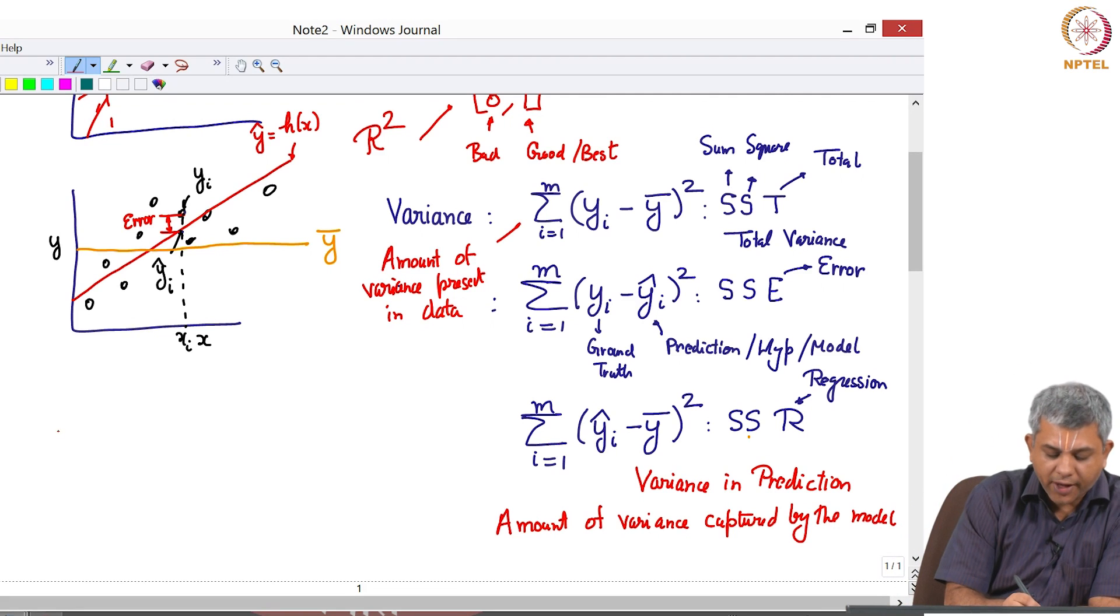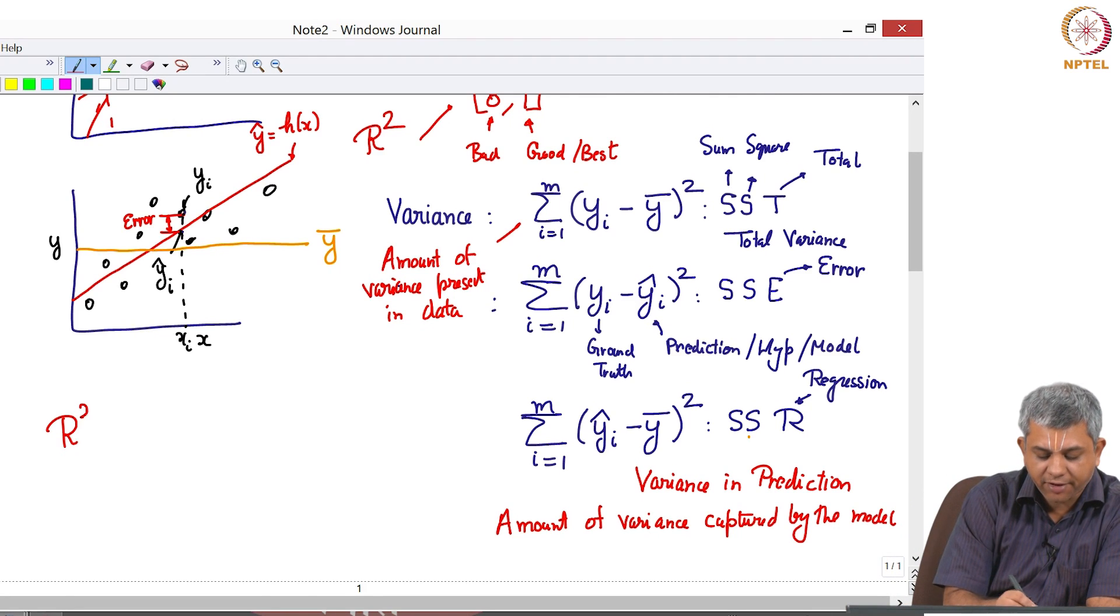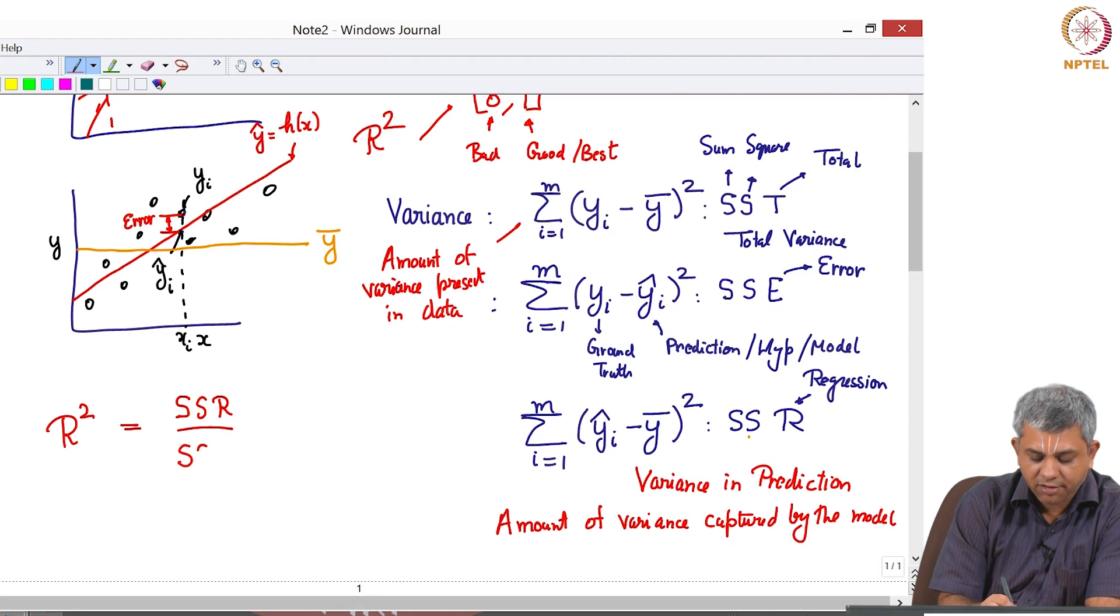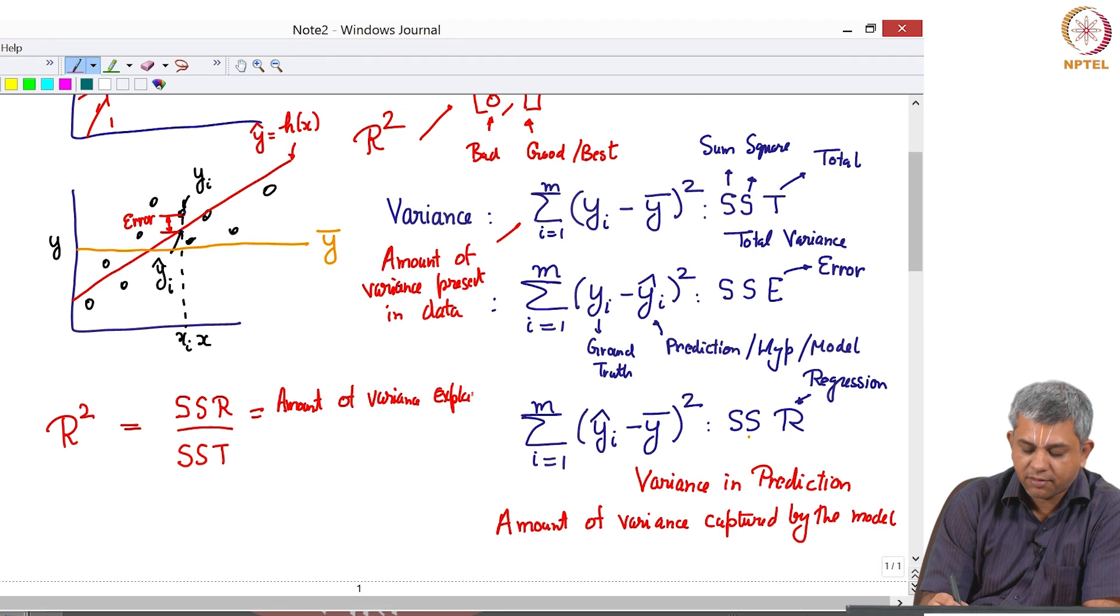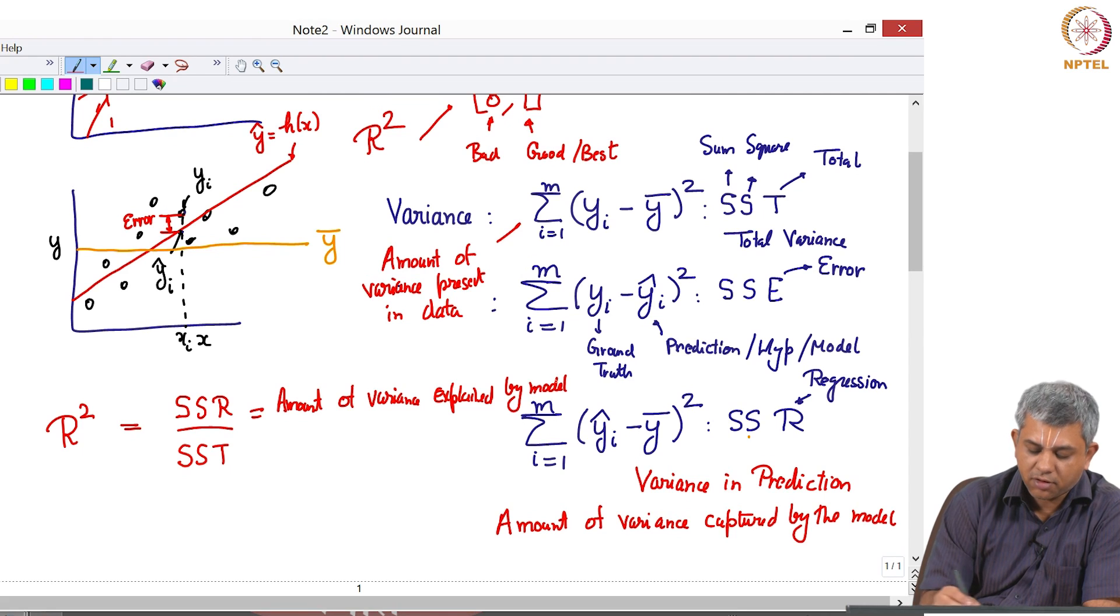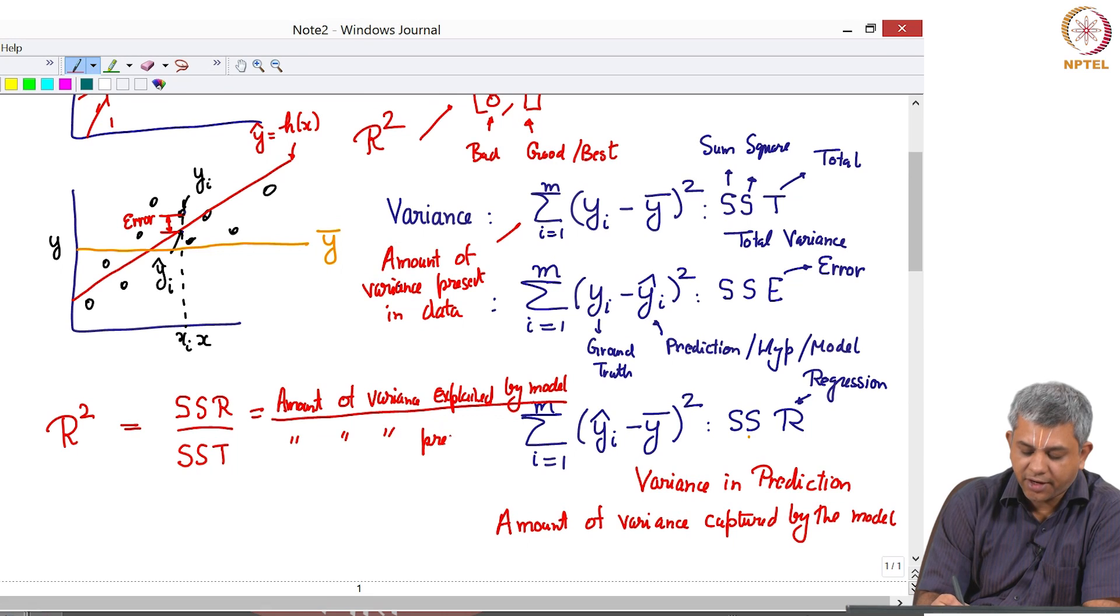This is called the amount of variance captured by the model, and the first term is the amount of variance present in data. So R square is defined as SSR by SST. Physically this means amount of variance explained or captured by model divided by amount of variance present in data.